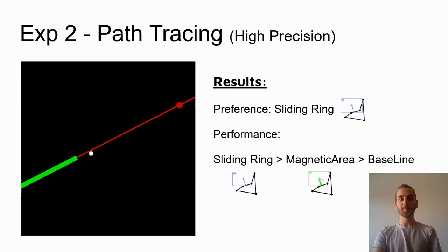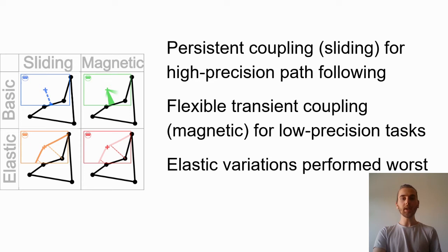With our work, we showed overall that persistent coupling, like the sliding techniques, works well for high precision path following tasks where controlling the AR view is hard. But also that flexible transient coupling, like magnetic techniques, works best for low precision tasks. We also saw that the elastic variations for our metaphor did not perform well. But more generally, we demonstrated that having a visualization context on an external display and a personal navigation view in a headset is feasible and experimentally shown.